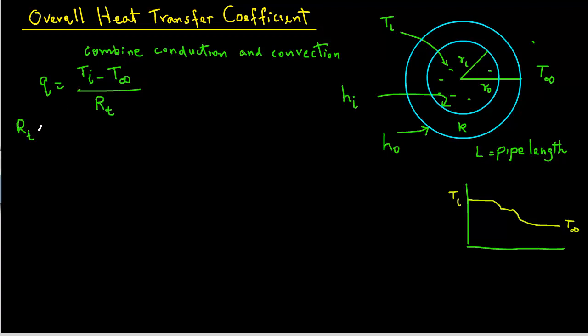So RT will be equal to RT for the inside convection, that is inside the pipe, plus RT for conduction through the pipe material. And then RT for the outside of the pipe, which is again due to convection.